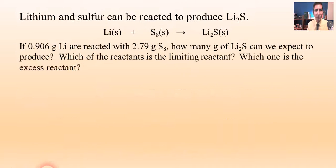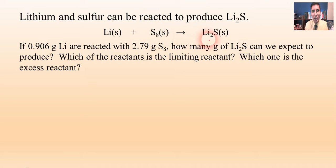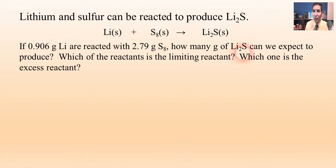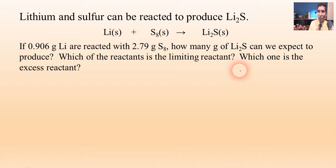Now let's take a look at a couple of examples. We're going to take lithium and sulfur and react them to produce lithium sulfide. Lithium is Li, sulfur in its most natural form is usually S8, and we are going to make some Li2S. The question says: if we take 0.906 grams of lithium and react it with 2.79 grams of S8, how many grams of lithium sulfide can we expect to produce? We also need to determine which reactant is the limiting reactant and which one is the excess reactant.